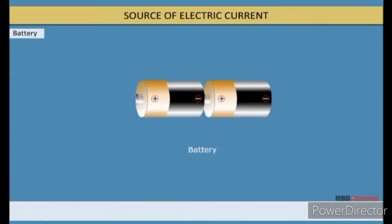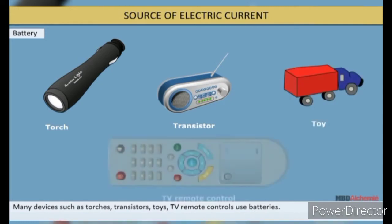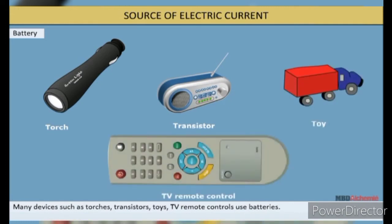Battery: When two or more cells are used to draw an electric current, the combination of cells is called battery. In battery, positive terminal of one cell is connected to the negative terminal of the next cell. Many devices such as torches, transistors, toys, TV remote controls use batteries.